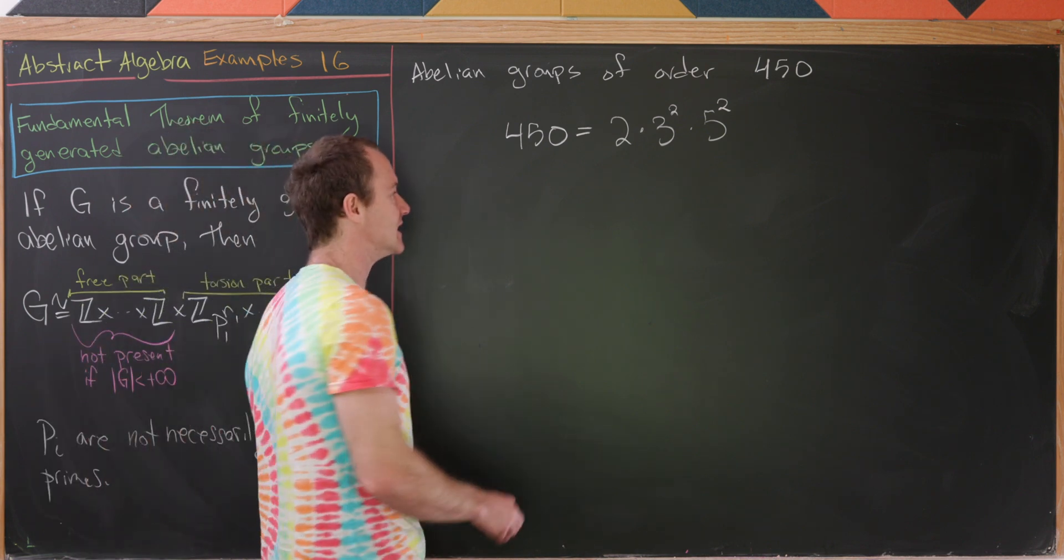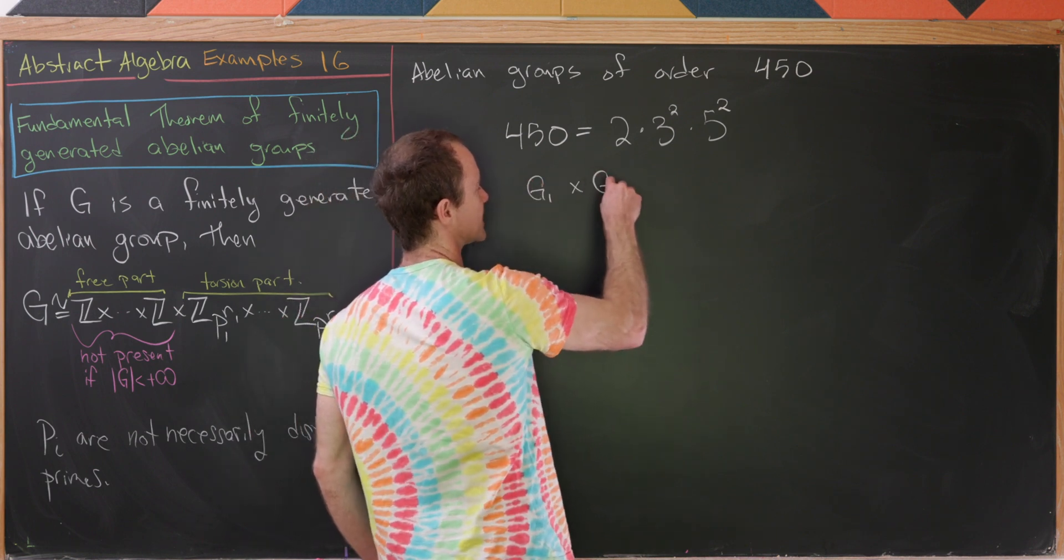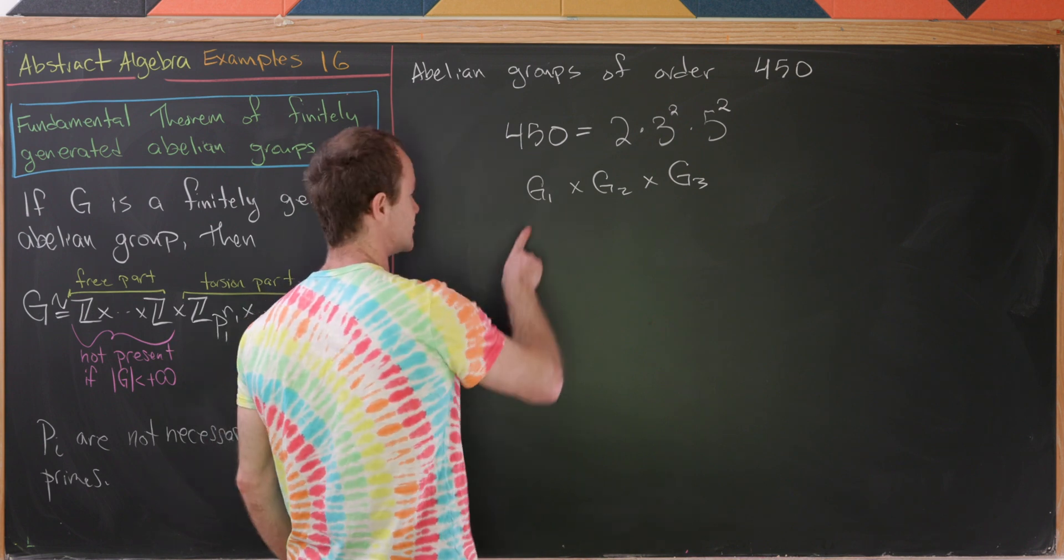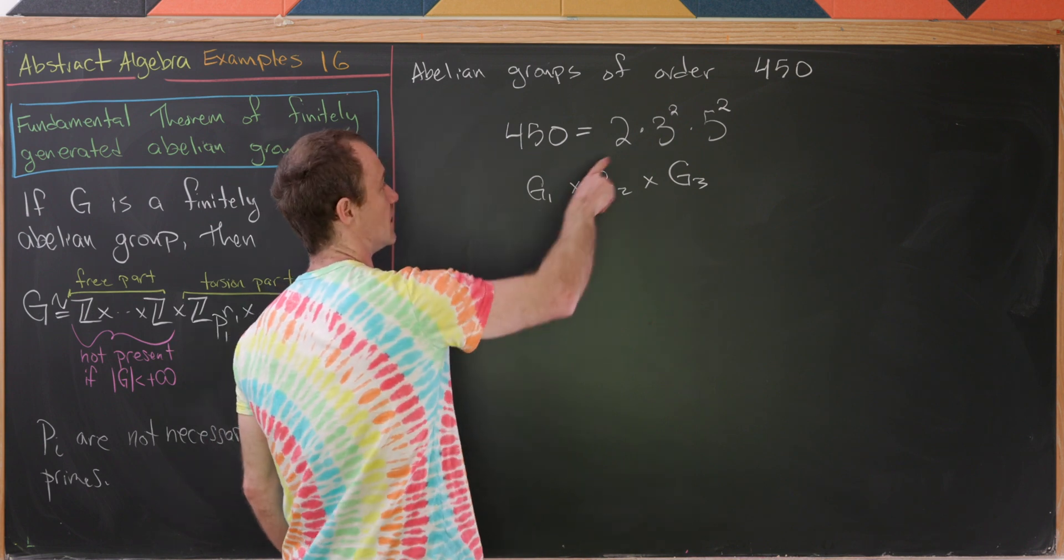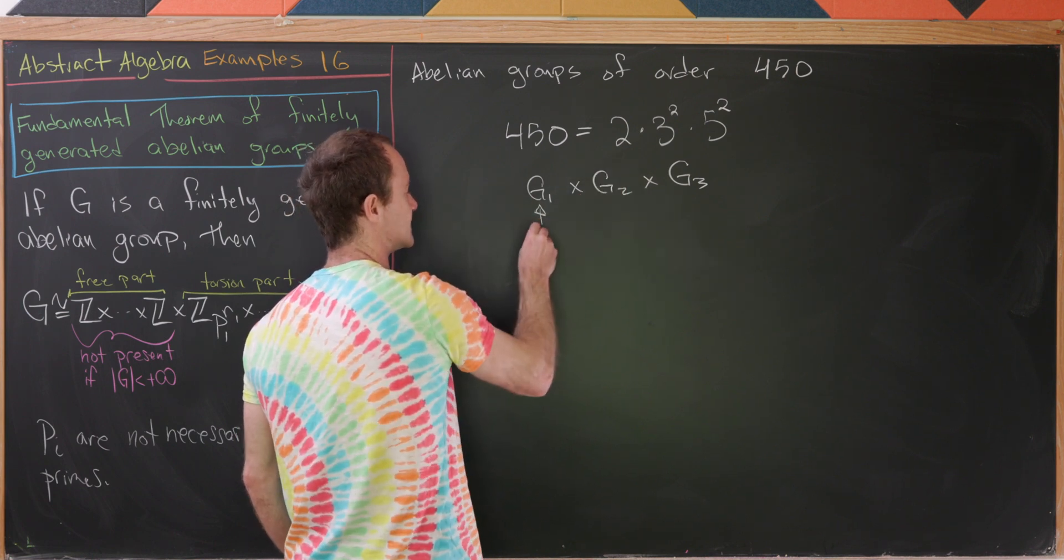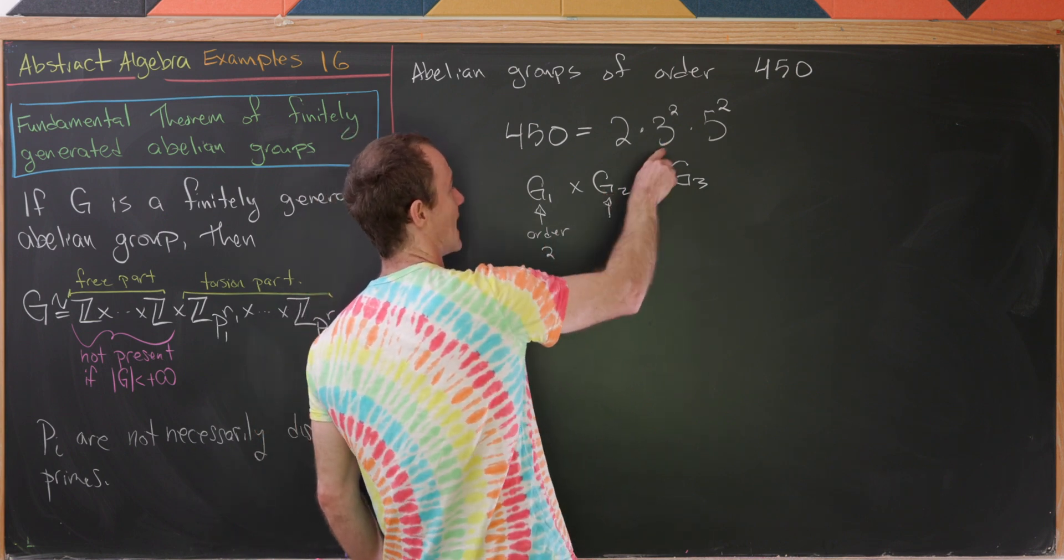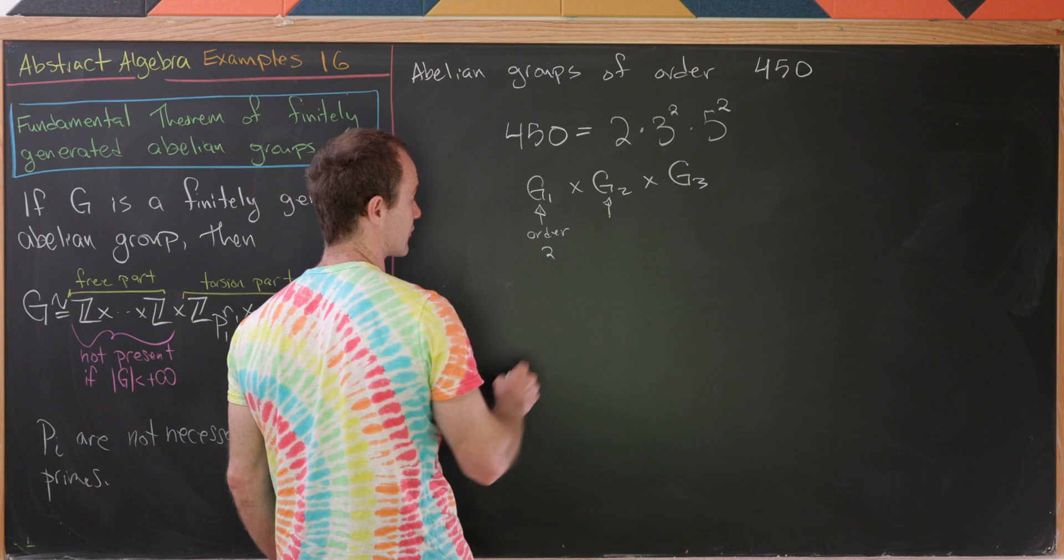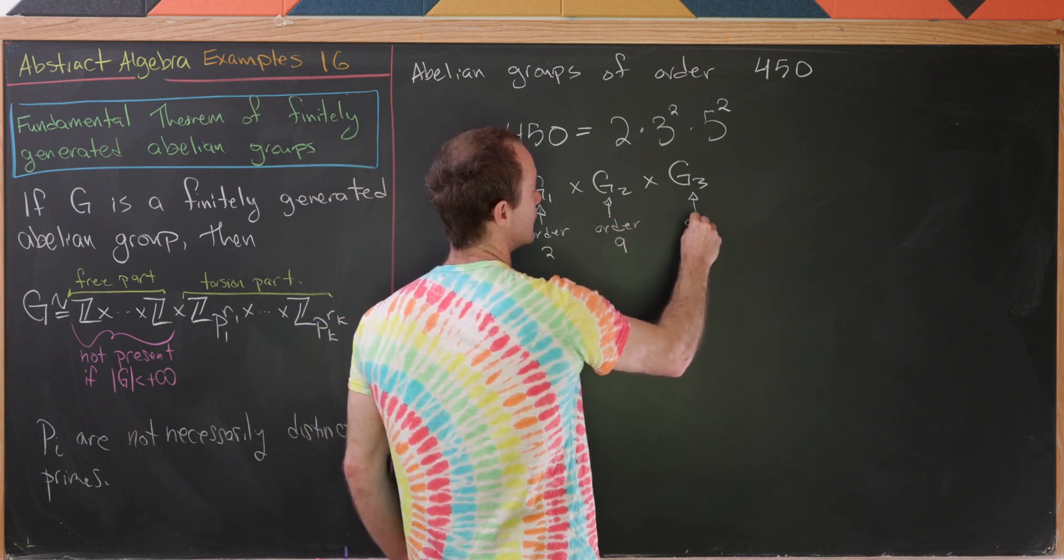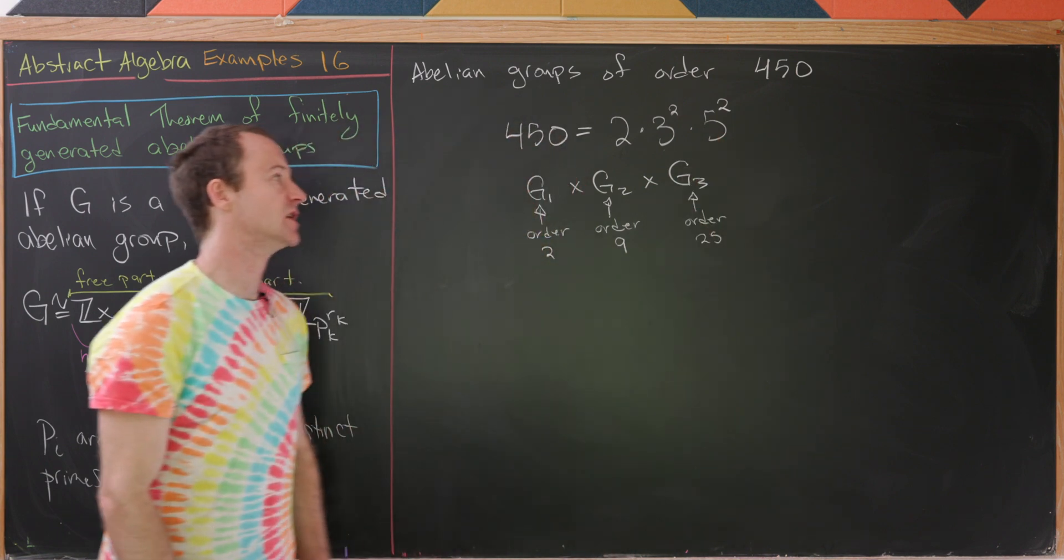So now our idea will be to write this in the form G1 cross G2 cross G3. This G1 will encapsulate everything of this prime factor 2, so this will be order 2. This G2 will encapsulate everything with a prime factor of 3, so this will be order 9. And then G3 will be order 25. That's everything of the prime factor 5.